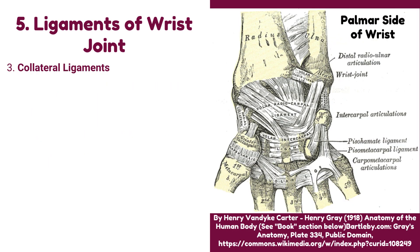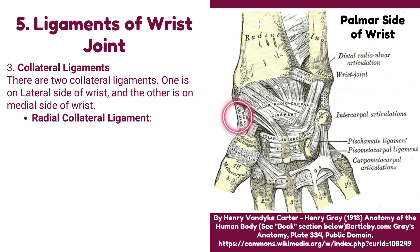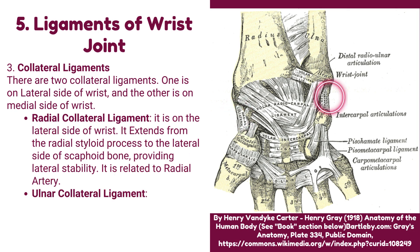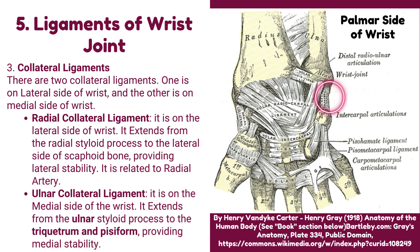Collateral ligaments of the wrist joint: there are 2 collateral ligaments, one on the lateral side and one on the medial side of the wrist. Radial collateral ligament: it is on the lateral side of the wrist, extending from the radial styloid process to the lateral side of the scaphoid bone, providing lateral stability. It is related to the radial artery. Ulnar collateral ligament: it is on the medial side of the wrist, extending from the ulnar styloid process to the triquetrum and pisiform, providing medial stability.